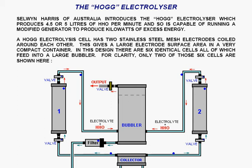This is a description of the HOG electrolyzer. Selwyn Harris of Australia introduces the HOG electrolyzer which produces 4.5 or 5 litres of HHO gas mix per minute and because of that it is capable of running a modified generator to produce kilowatts of excess energy.